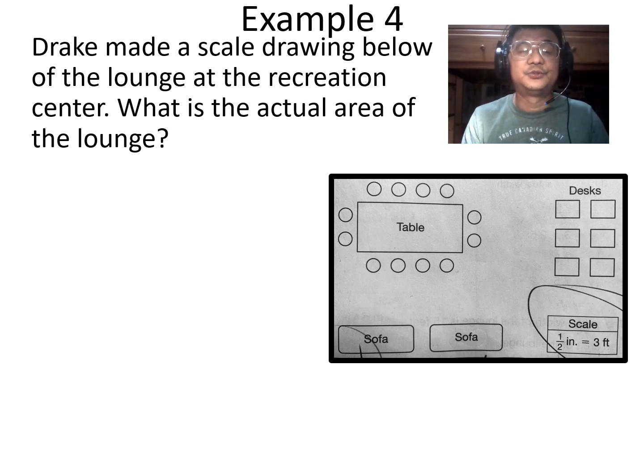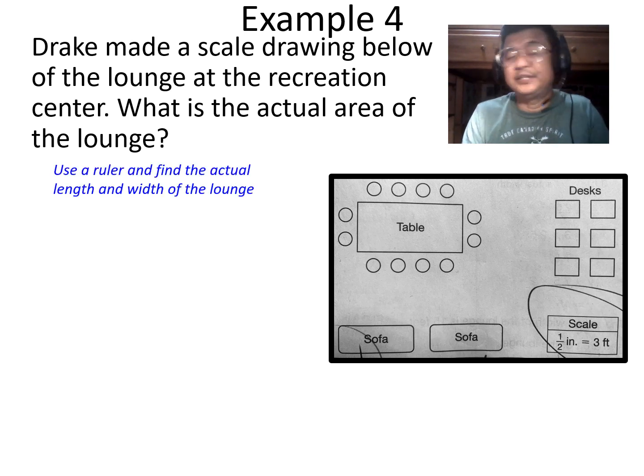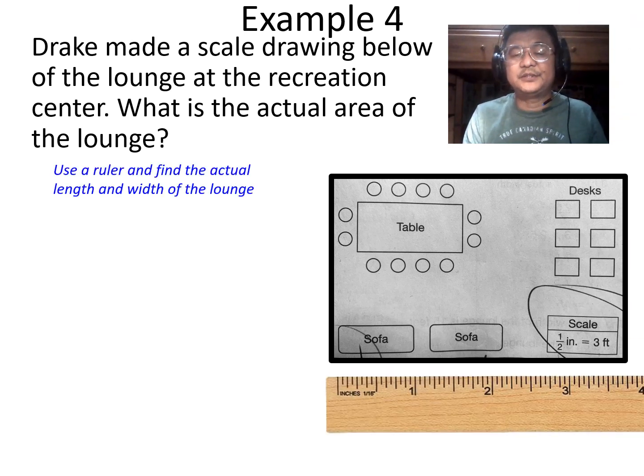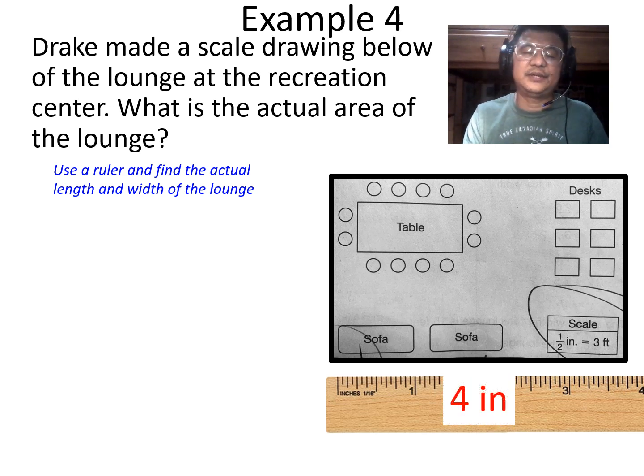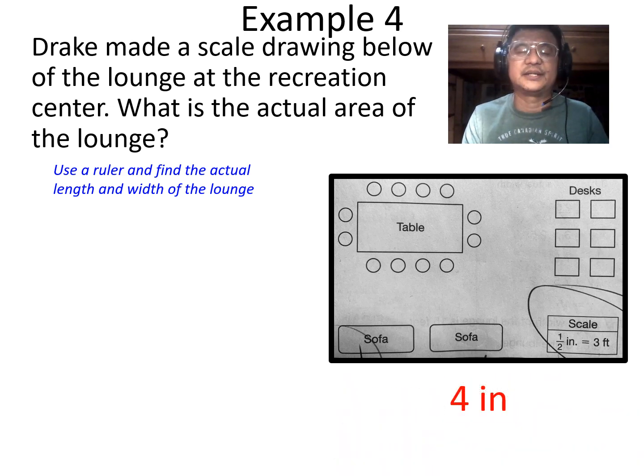Now, Drake made a scale drawing below of the lounge at the recreation center. The lounge. Okay? Now, check this out. Use a ruler because they didn't give any dimension. Imagine we had the ruler and we actually measured it. Check out the distance: 1 inch, 2 inches, 3 inches. What do you think? Alright. So let's write it down. 4 inches. Correct?